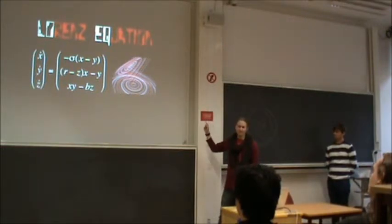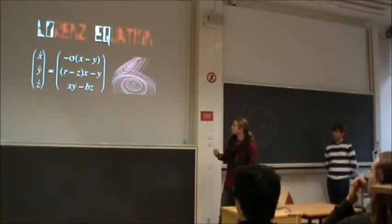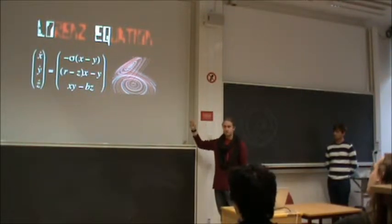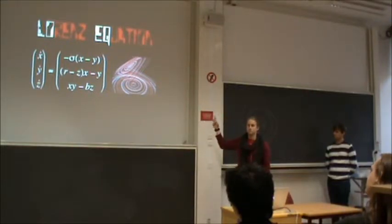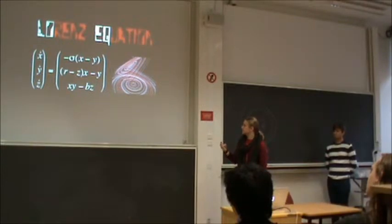Looking at the Lorenz attractor, one might ask: why is it chaotic? It looks very regular. It is chaotic by the definition: first, it is aperiodic — the trajectory does not settle into stable orbits; there are some orbits within the attractor but they are not stable. Secondly, we don't put in any randomness — this arises straight from the nonlinearity.